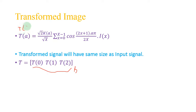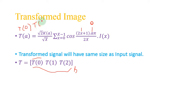First we shall find T(0): we put a=0 in the formula, and x varies from 0 to X-1. By putting these values of x and a we obtain T(0). Similarly for T(1), we put a=1, and x varies from 0 to 2 — so x will first be 0, then 1, then 2.